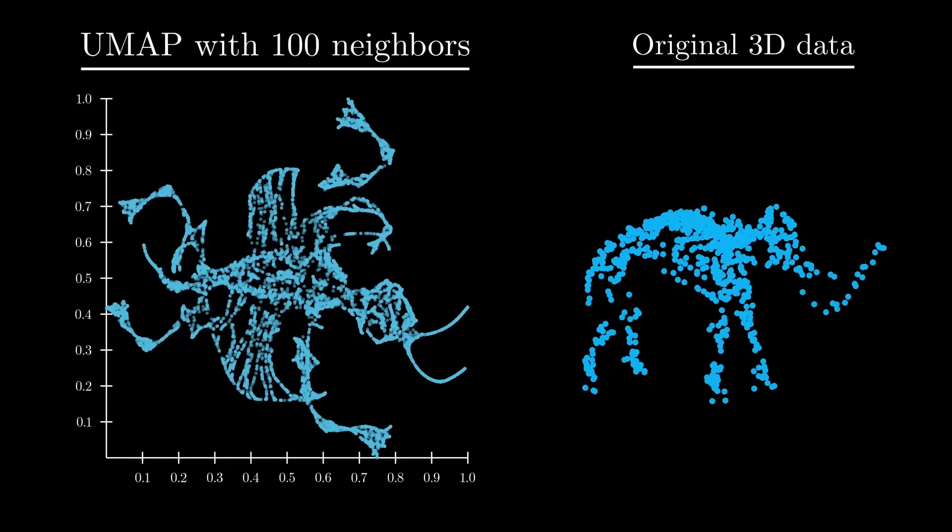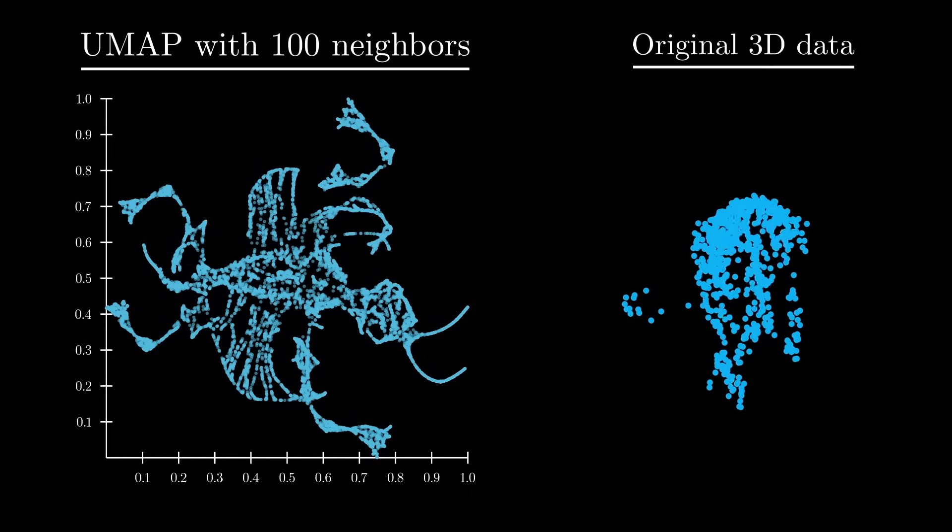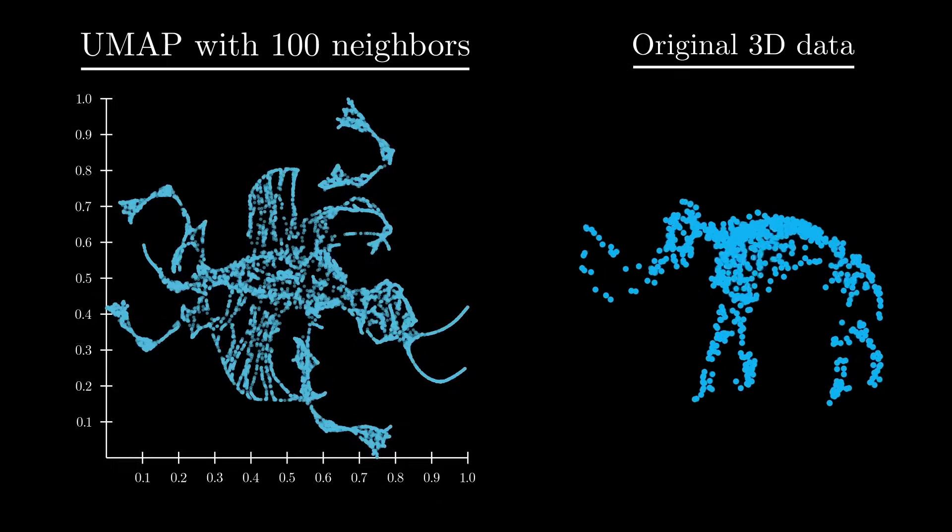Finally, UMAP is pretty good at preserving global structure. As you can see, the parts of the mammoth that are close together in 3D stay close together in the 2D projection. Even though UMAP often outperforms PCA and t-SNE, these two techniques are still widely used in engineering and research.